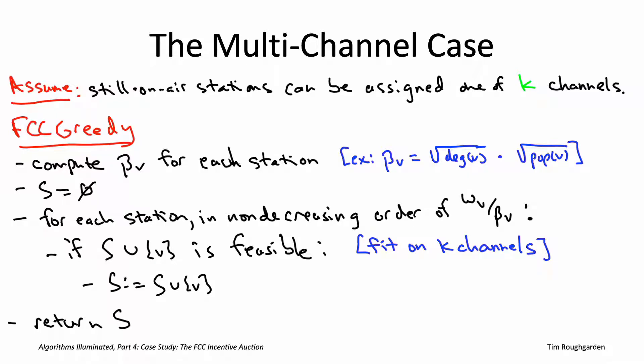This FCC greedy algorithm looks like all of our other greedy algorithms. In particular, it looks almost identical to that general greedy algorithm that we discussed for weighted independence set. But let's drill down on an iteration of the main loop, which is responsible for testing if the current station V can be added to the solution so far capital S without destroying feasibility. Now, what does it mean for a subset of stations to be feasible?